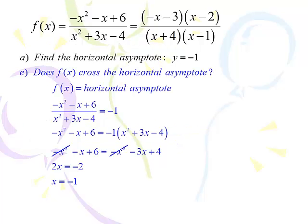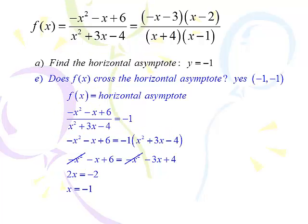Does the function cross the horizontal asymptote? Set the original function equal to negative 1. Multiply by the denominator, distribute the negative 1, and the lead terms cancel out — they always cancel out. Adding 3x to both sides and subtracting 6, we get x equals negative 1. So when x is negative 1, y is negative 1 — we do cross the horizontal asymptote. If this process gives something like 8 equals 6, then no crossing; a legitimate x value means yes.